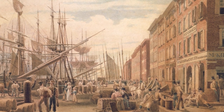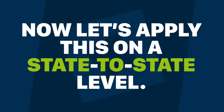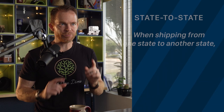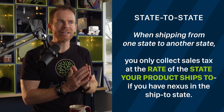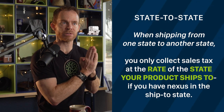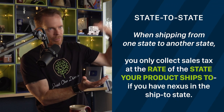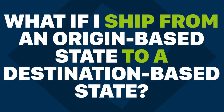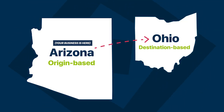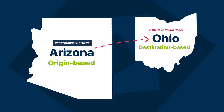Now let's apply this on a state-to-state level. When shipping from one state to another state, you only collect sales tax at the rate of the state your product ships to, assuming you have nexus — physical or economic — in that ship-to state. But what if you ship a product from an origin based to a destination based state? For example, shipping from Arizona, which is origin based, to Ohio, which is destination based. If you have nexus in Ohio, then you collect tax based on the tax rate of the location in Ohio where your product ships to. Even though you have nexus in Arizona because your business is located there, you do not have to collect any sales tax for Arizona.